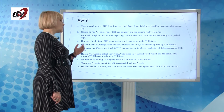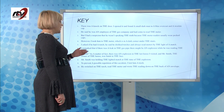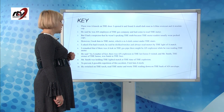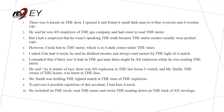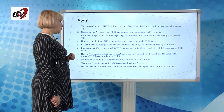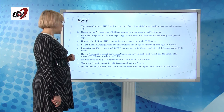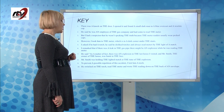Observați atunci când introduc o informație nouă — ca de exemplu "a torch," "a leak" sau "an explosion" — se folosește întotdeauna articolul nehotărât, "a" sau "an." Iar atunci când folosesc articolul hotărât, este vorba fie de o informație specifică, fie de o informație reluată. He said: "As a matter of fact, there was an explosion in the last house I visited, and Mr. Smith, the owner of the house, was burned in the face." Mr. Smith was holding the lighted match at the time of the explosion.